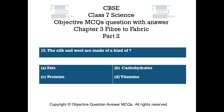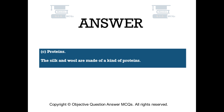Question number 15. The silk and wool are made of a kind of. Option A: Fats. Option B: Carbohydrates. Option C: Proteins. Option D: Vitamins. The right answer is Option C — Proteins. The silk and wool are made of a kind of proteins.